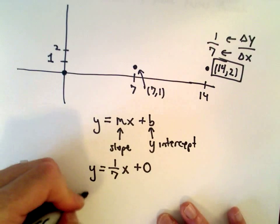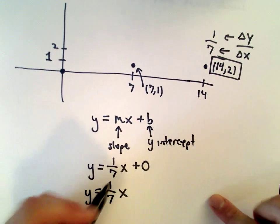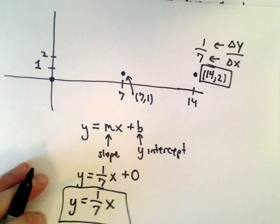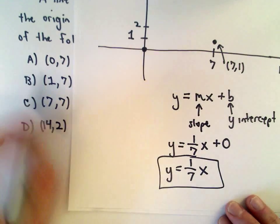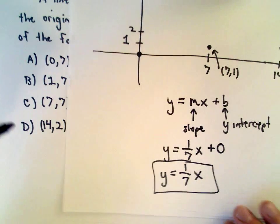Another way to do it - if you didn't want to graph it, maybe they gave you some really weird numbers, something not so easy - you could start substituting these points into the equation and see which one results in a true statement.